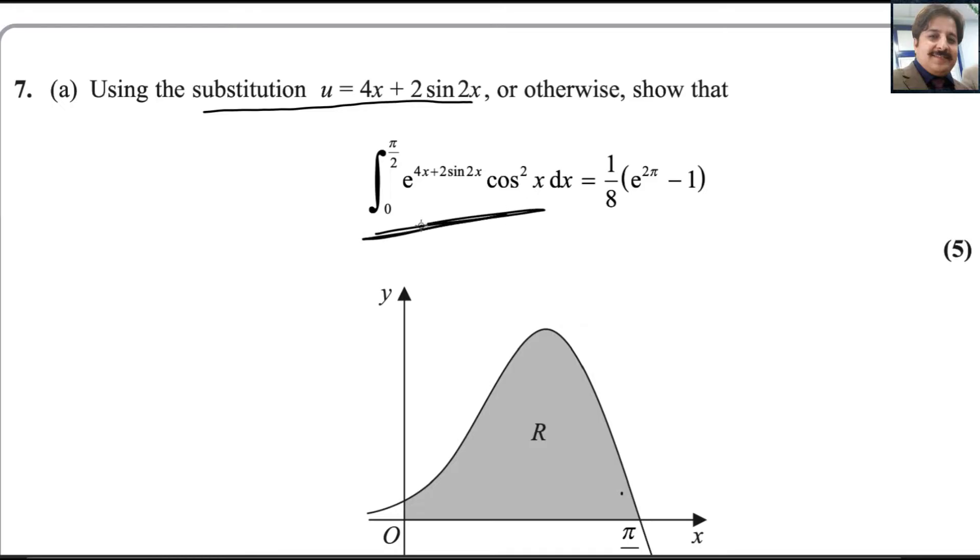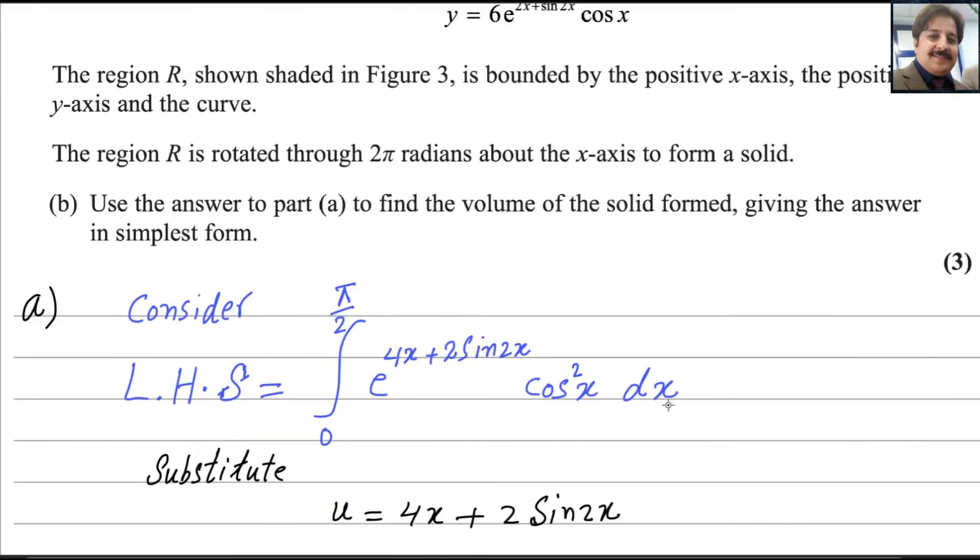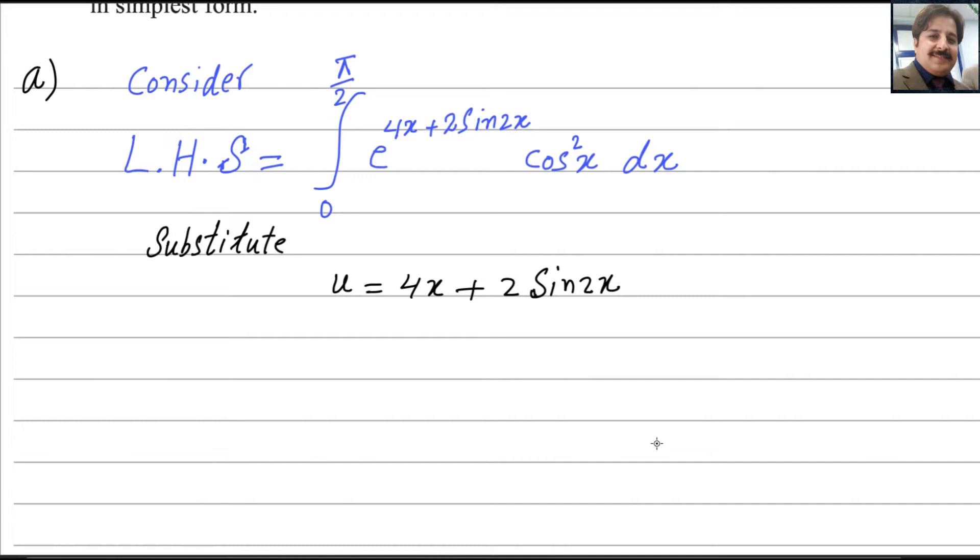Consider the left hand side, then we will solve it and find the integral. According to the question, you must substitute u equals 4x plus 2 sin 2x. Now we will differentiate with respect to x. The derivative of u is du/dx, and the derivative of 4x is 4 plus 2 times the derivative of sin 2x is cosine 2x. The angle derivative is multiplied, so it's 2 cosine 2x.